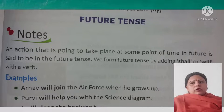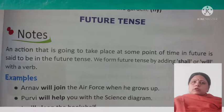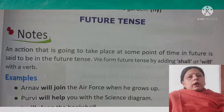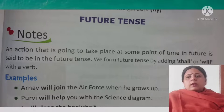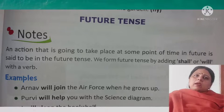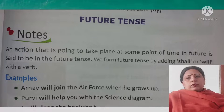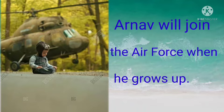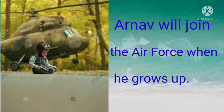An action that is going to take place at some point of time in future is said to be in future tense. Yani jo action abhi hona hai usko hum future tense kehte hain. We form future tense by adding shall or will to verb 1. For example: Arnav will join the air force when he grows up. Arnav abhi chhota hai — jab woh grow up hoga, bada hoga, then he will join the air force.